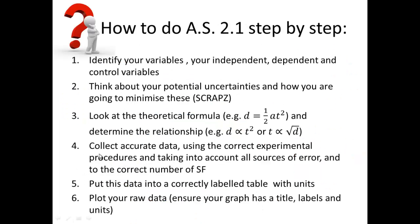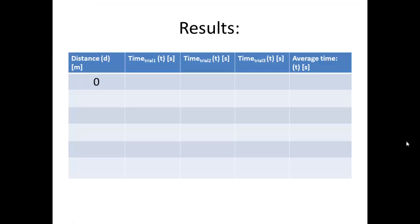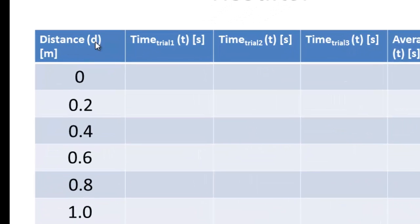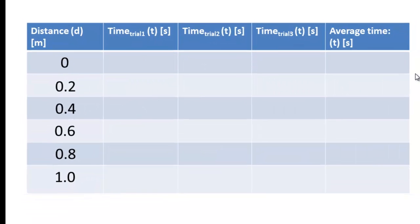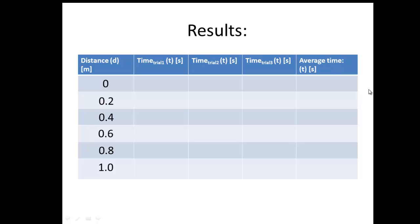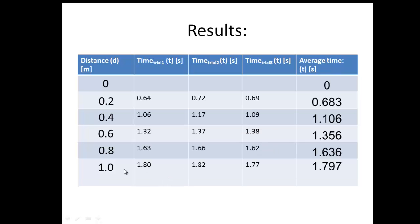Step number four: collect accurate data using the correct experimental procedures and take into account all sources of error to the correct number of significant figures. In physics we expect to have five different variables. For zero distance, there'll be zero time. Notice how my table is nicely set up with distance being the physical quantity d and the units as meters. Time unit is t with the units being seconds in square brackets. Now we can go away and do the experiment and come back with some values.